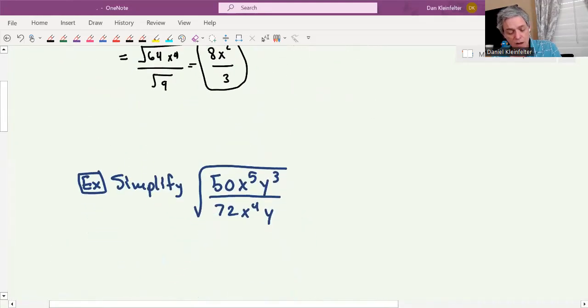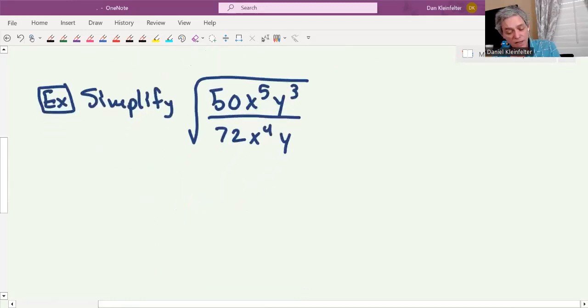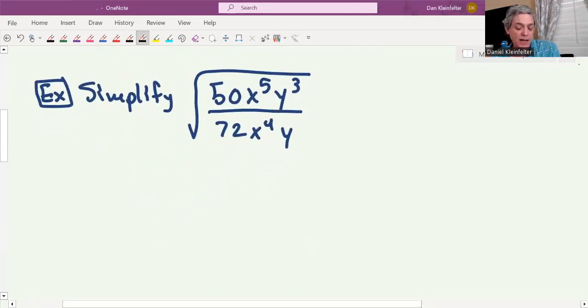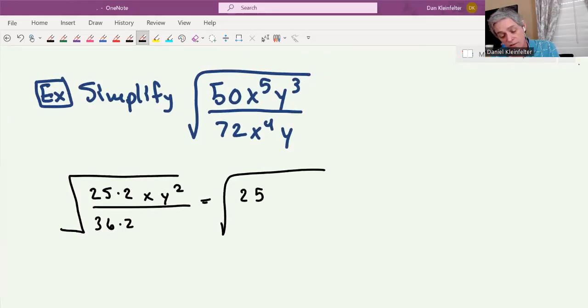For this last one, take a minute, pause the video, try this one yourself, and then restart the video and see how you did. So for this one, there's a lot going on. We have 50 and 72. I know 50 is 25 times 2, 72 is 36 times 2, so we can do a little something there. We've got factors of x and y that we're going to be able to simplify. So what I would do is simplify first before breaking up this radical. We'll call that 25 times 2, and then 36 times 2. x to the fifth divided by x to the fourth will give us a single x. y cubed divided by y will give us y squared. The common factors of 2 divide out.